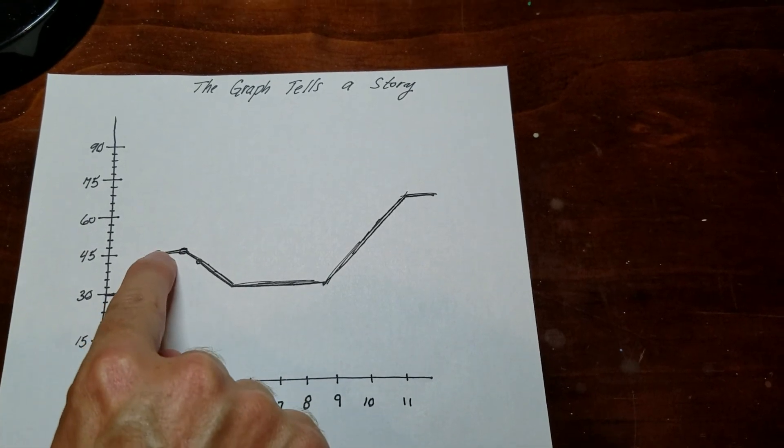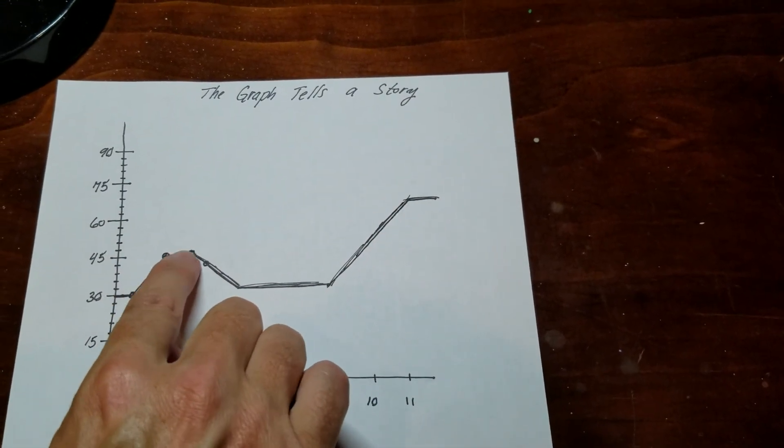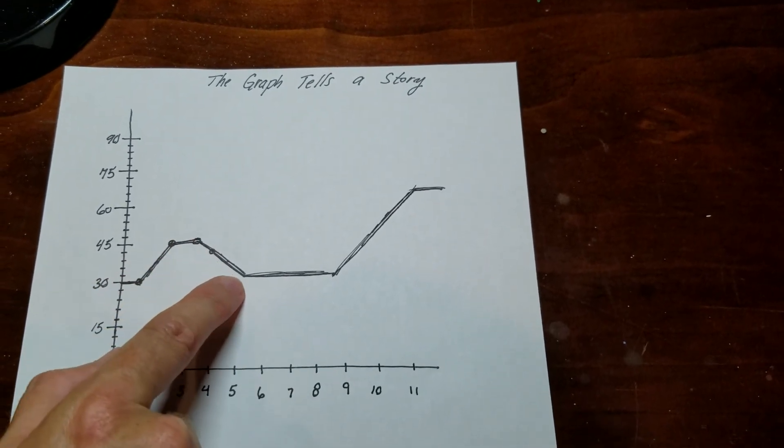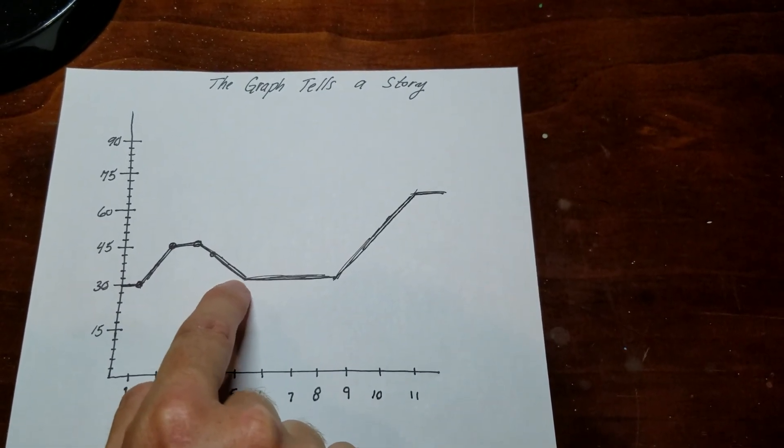So then what happens is it goes up to 45 and then the weather's okay. So it stays at 45 and then it gets really hot and the water starts to evaporate and it's back down to 30 and then it kind of cools off again.